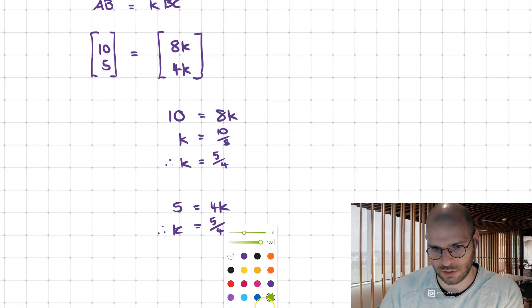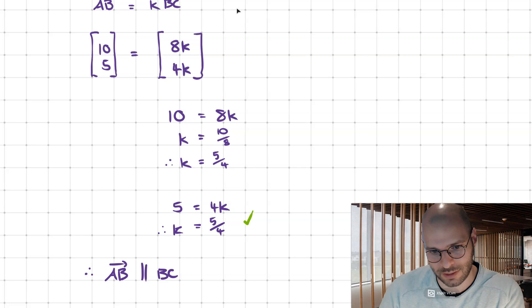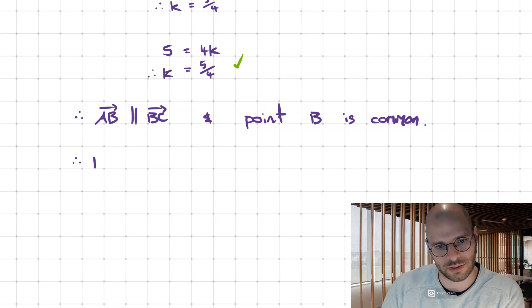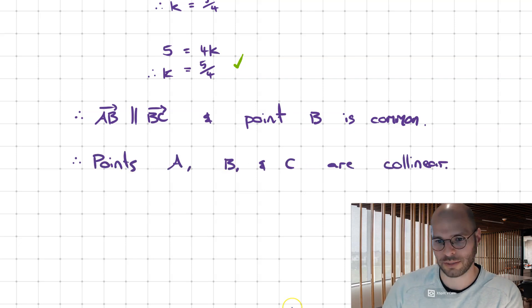So it works. Hence, AB is parallel to BC and point B is common. Therefore, points A, B and C are all collinear.